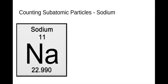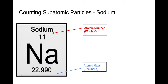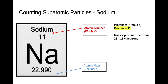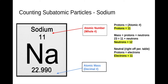Let's do another example — let's use the element sodium. Starting by counting the subatomic particles: the atomic number is 11 and the atomic mass is 22.9, which we'll round to 23. Remember, the protons are equal to the atomic number, so sodium has 11 protons. The mass equals the protons plus the neutrons: 23 equals 11 plus neutrons, which means sodium has 12 neutrons. And since this is neutral, the protons will equal the electrons, so we will also have 11 electrons — giving us 11 protons, 12 neutrons, and 11 electrons.